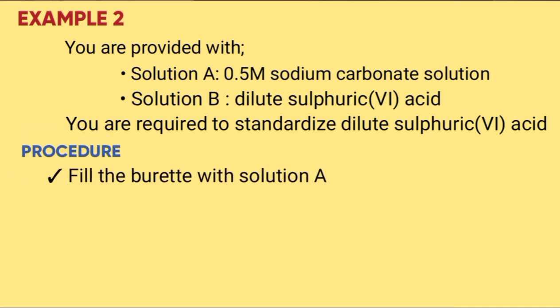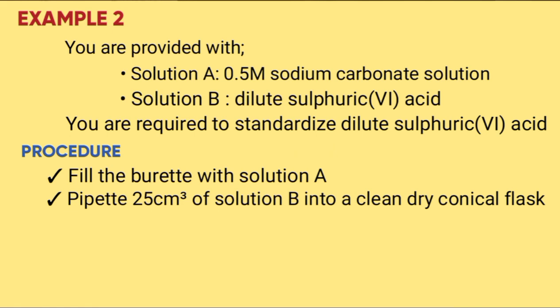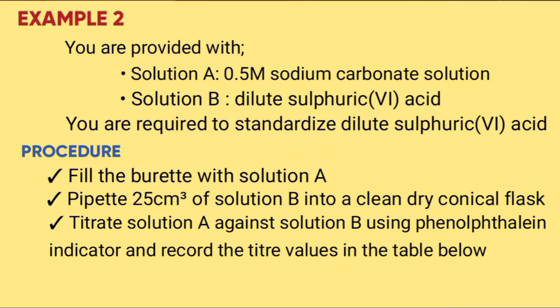Procedure: Fill the burette with solution A. 2. Pipette 25 cm³ of solution B into a clean, dry conical flask. 3. Titrate solution A against solution B using phenolphthalein indicator and record the titration volumes in the table below. Repeat the procedure and complete the table below.